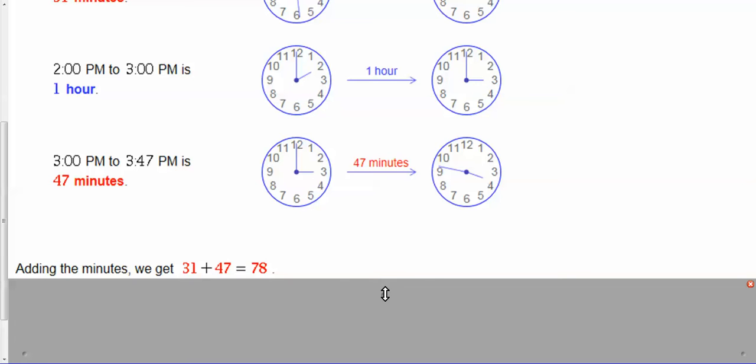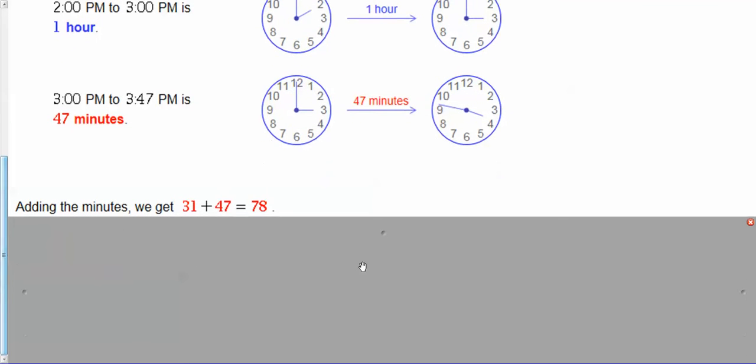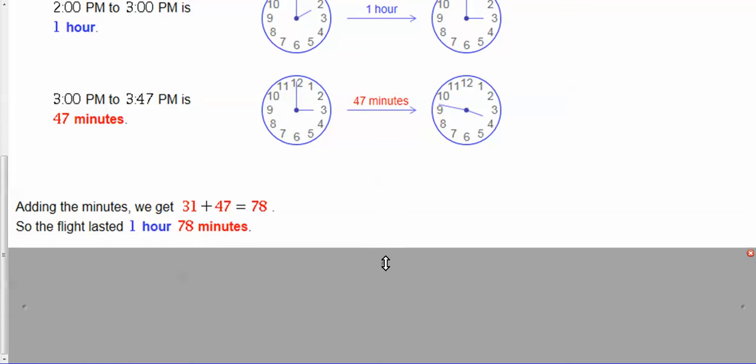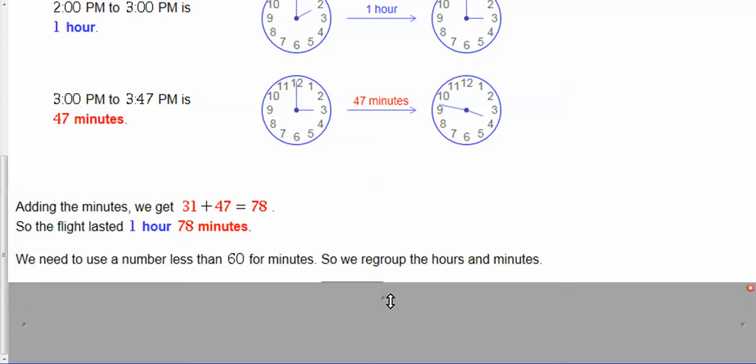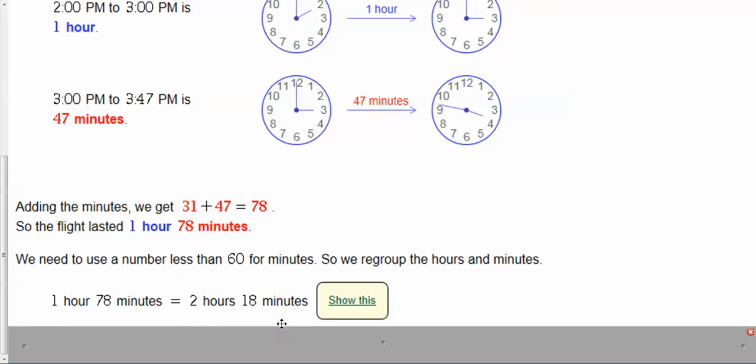Because remember, there's only 60 minutes in an hour. So the minutes only go up to 59. So what you have to do is you've got to trade it in. So I've got to trade in 60 of those minutes for an hour. So I get 1 hour and 78 minutes is also known as 2 hours and 18 minutes.